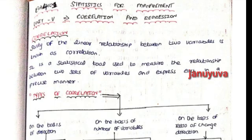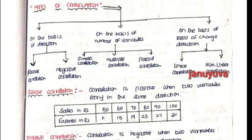Now let's talk about Correlation and Regression, Unit 5. That is Correlation. The study of linear relationship between two variables is known as Correlation. Types of Correlation: on the basis of direction, on the basis of number of variables, and on the basis of ratio of change direction. These are the subdivisions.